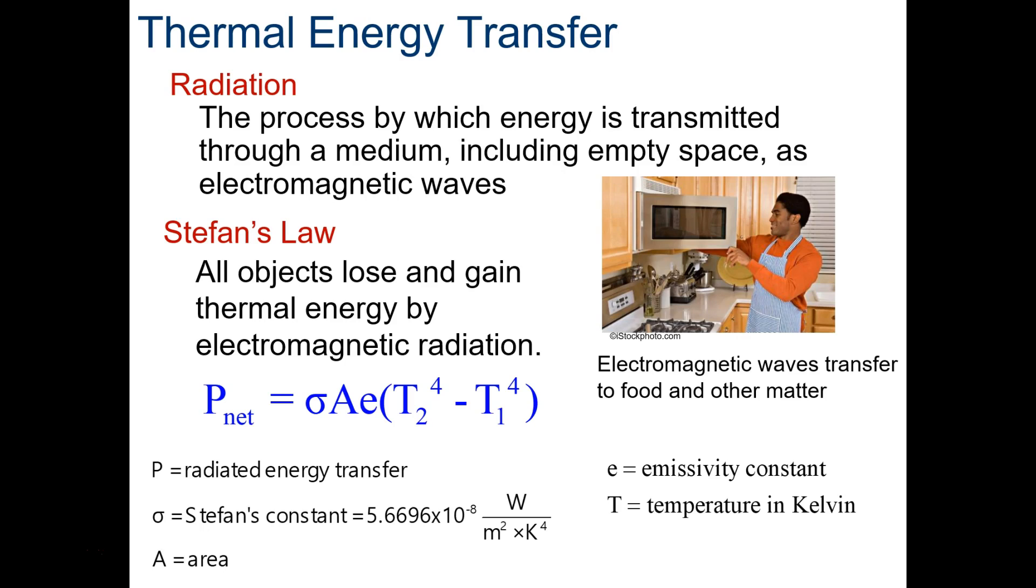Radiation. The next energy transfer system. Write this down. It is a process by which energy is transmitted through a medium, including empty space, as electromagnetic waves. Stefan's law: all objects lose and gain thermal energy by electromagnetic radiation. You can get his equation right there and the variables. So P net is equal to Stefan's constant times A for area, and then E is the emissivity constant. And then this is where it gets tricky. This is temperature two in Kelvin, but you have to put it to the fourth power minus temperature one, again in Kelvin, to the fourth power. So those are some very very large numbers. Stefan's constant is a very small number, 5.6696 times 10 to the negative 8, that's watts per meter squared times Kelvin to the fourth. And then we multiply that times area. Of course, most famous form of radiation is a microwave. That's how it cooks or heats up your food. Electromagnetic waves transfer to food and other matter.